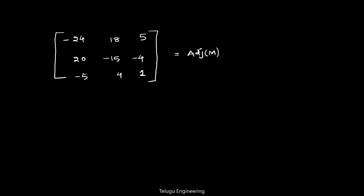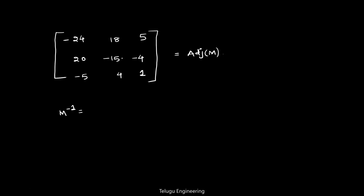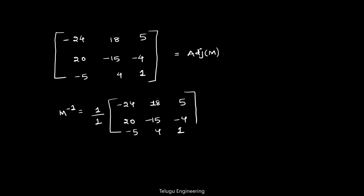Now M inverse equals 1 divided by det(M), which is 1, multiplied by the adjoint matrix [−24, 18, 5; 20, −15, −4; −5, 4, 1]. So this is our M inverse.